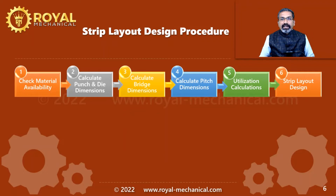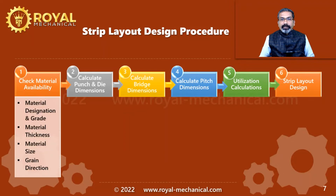Let me explain each step in detail. Step one: check the material availability. As mentioned in the previous video, during the concept design we understood the part requirements — such as material, material thickness, burr side, and grain direction. During this step, we are going to check if this material is available in the market.